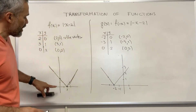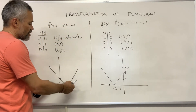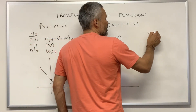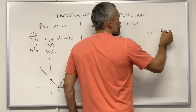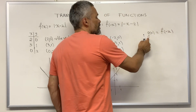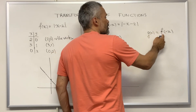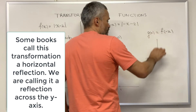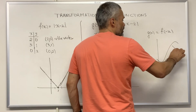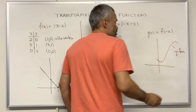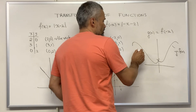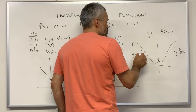We see that the new graph is just the reflection across the y-axis. In general, if we have a function f of x and we consider the function f of negative x, then the graph of g is going to be the reflection across the y-axis of the graph of f. For example, if this is your graph f, then your graph g is going to look like this.